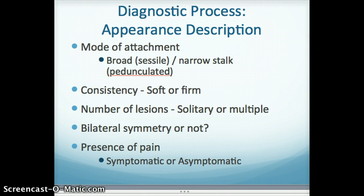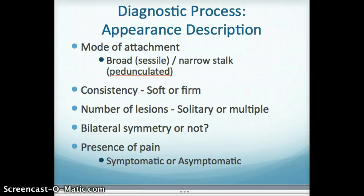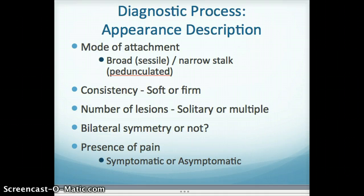The mode of attachment is also important. Some lesions have a very broad base where they attach to the tissue — we call that sessile. Lesions with a narrow stalk, like a mushroom, are called pedunculated. Look at the consistency: is the tissue soft or firm? Is it a solitary lesion or multiple lesions? Do you have bilateral symmetry or not? Some conditions actually have a bilateral presentation — for example, leukoedema is a grayish white opalescent film on the buccal mucosa, both right and left, in many African-American patients. Is there the presence of pain? Is the lesion symptomatic or asymptomatic, and if so, how long has it been that way?